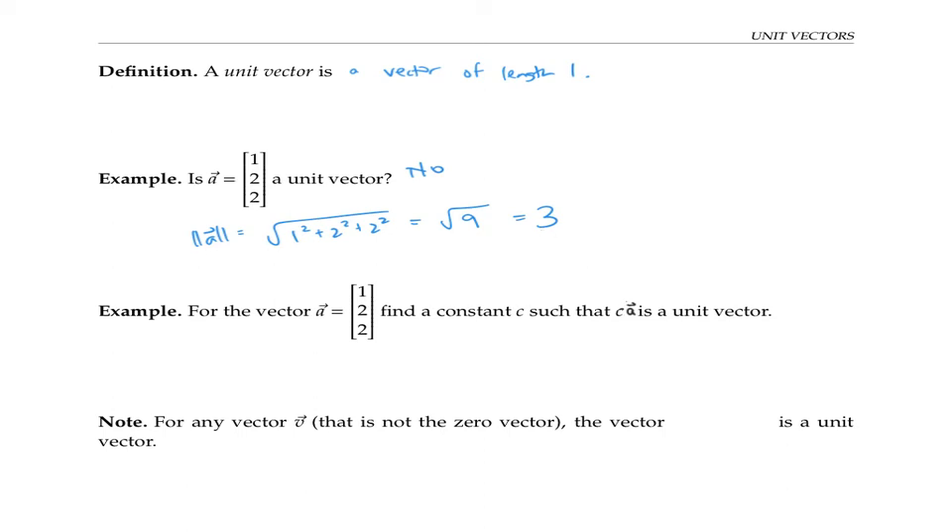If you're saying multiply it by one third, you're exactly right. Multiplying by one third will shrink it by a factor of three and get that length of three down to a length of one.